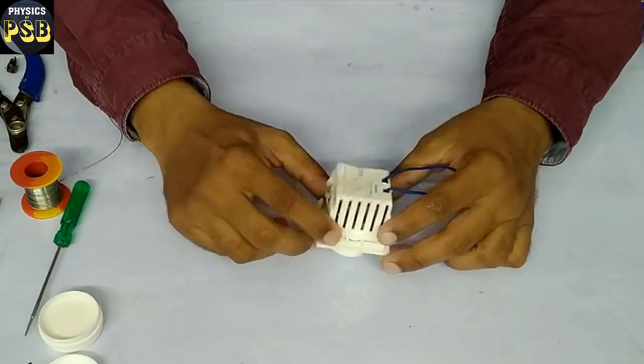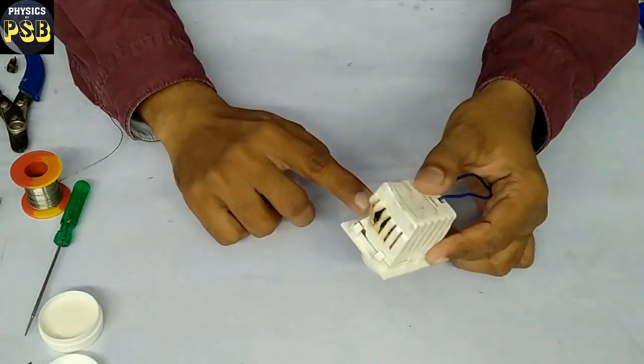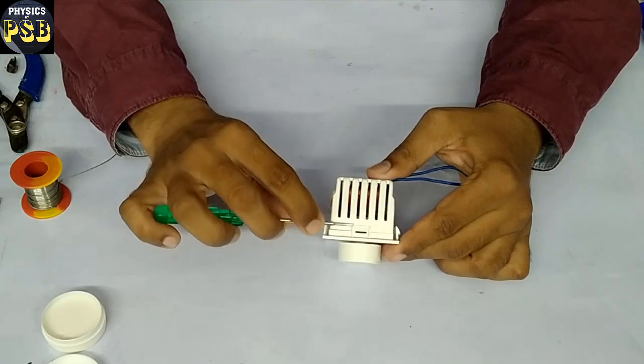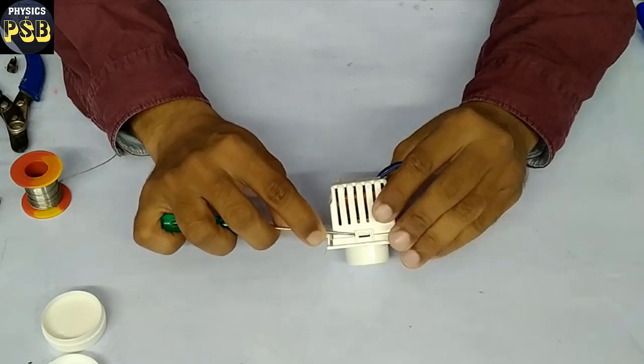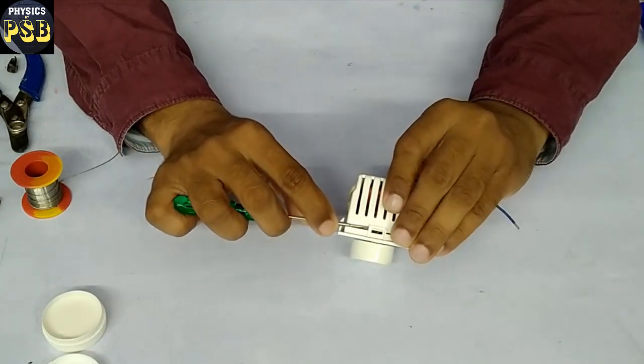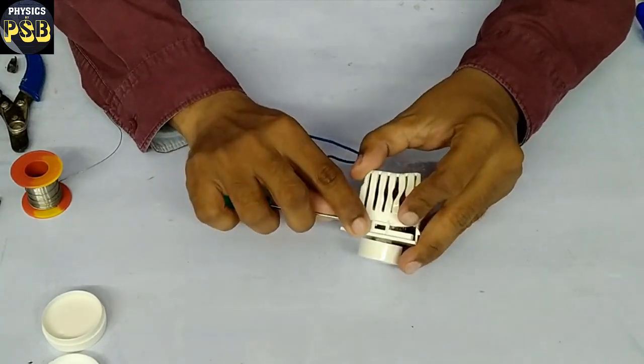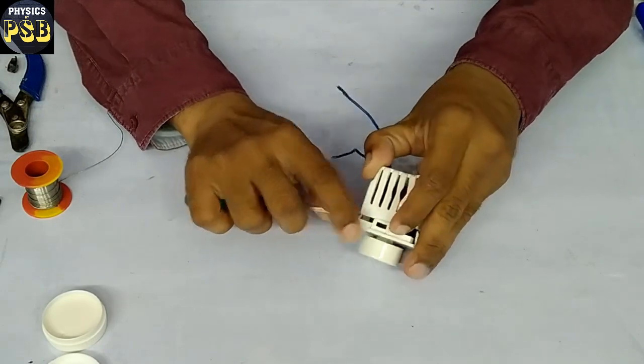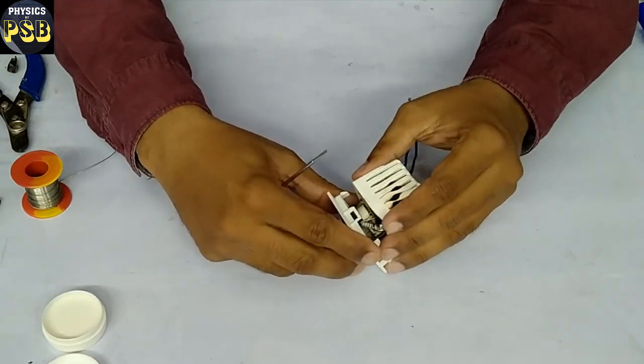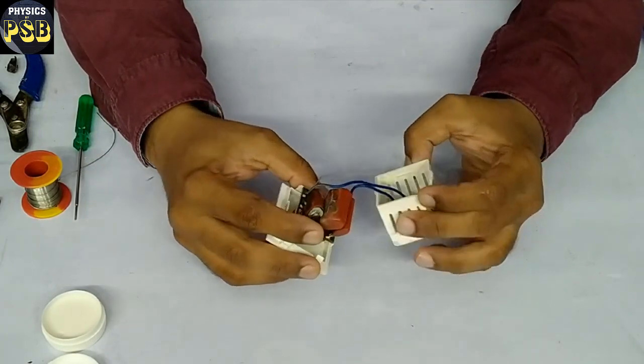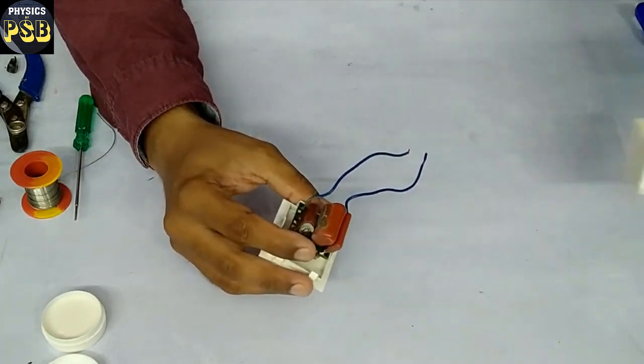If you look at this fan regulator, it is provided with two notches in order to open. Press and push this part in this manner. It will get loose. Do the same thing to this part. As you can see, it comes off easily. Open this way to see what's inside. It has come off.